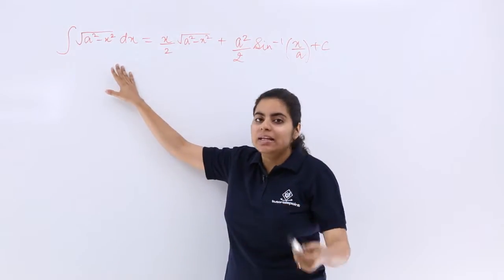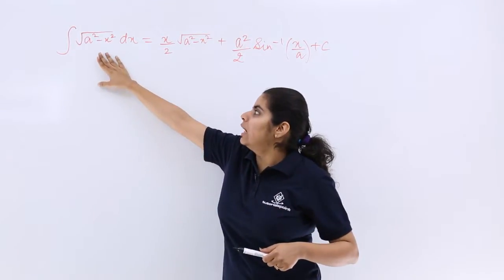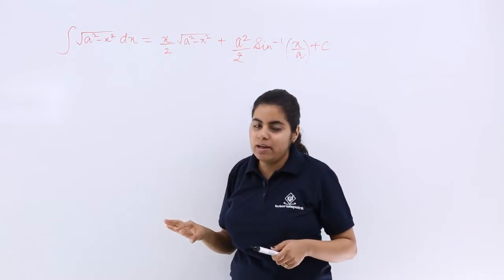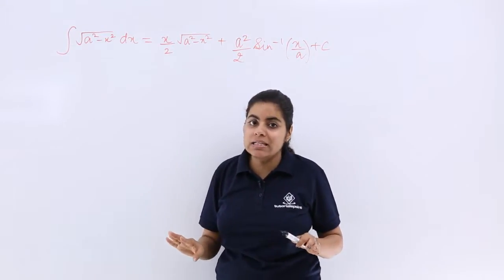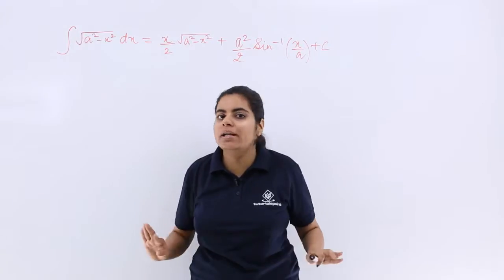The formula is to evaluate the integral of √(a² - x²) where √(a² - x²) is in the numerator only, not in the denominator.